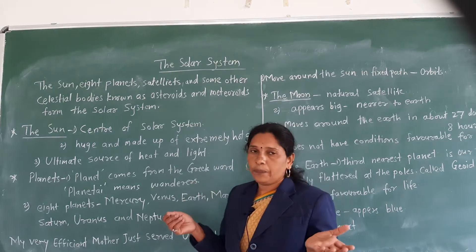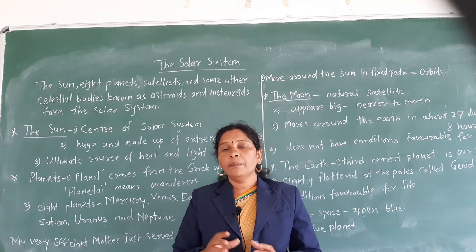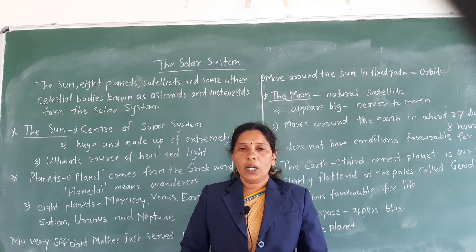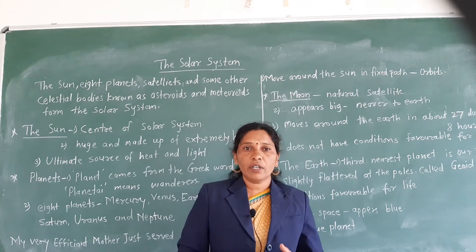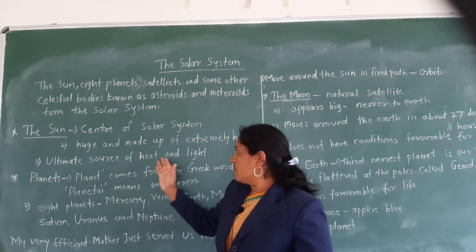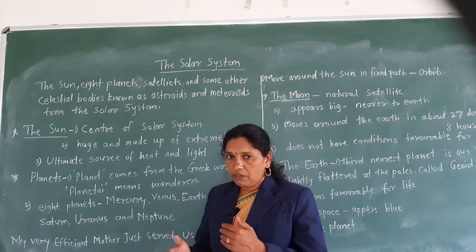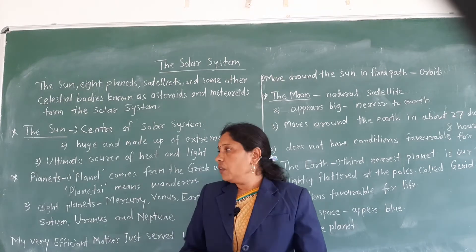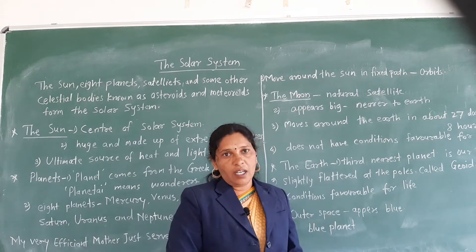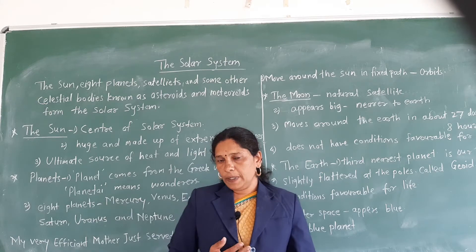The sun is very big, but it is so far away from us that it looks small. From the Earth, it is 150 million kilometers away. It is the ultimate source of heat and light — every planet, including Earth, gets light and heat from the sun, which makes life on Earth possible.